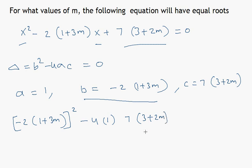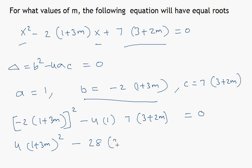Since the equation has equal roots, the discriminant must be set equal to zero. So we have 4 times 1 plus 3m squared minus 4 times 7 times the quantity 3 plus 2m equals zero, which simplifies to 4 times 1 plus 3m squared minus 28 times 3 plus 2m equals zero.